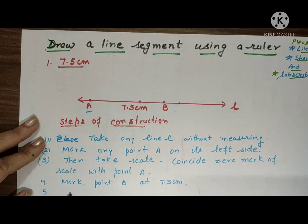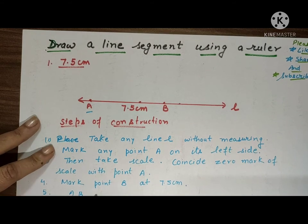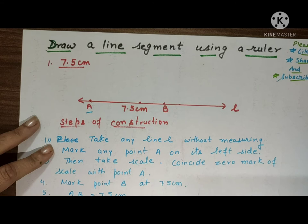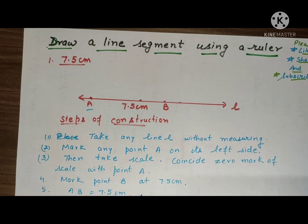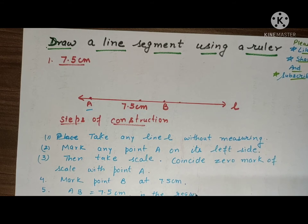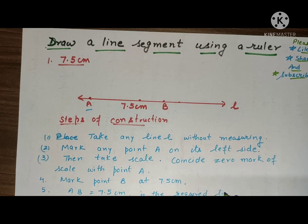Then AB is equal to 7.5 cm, which is the required line segment.